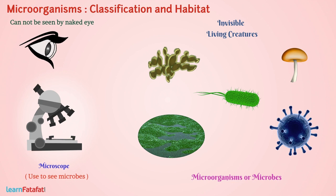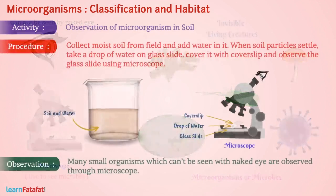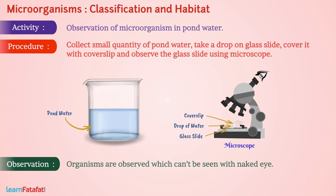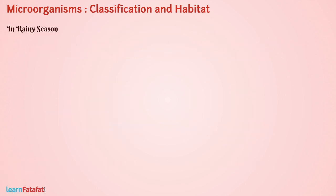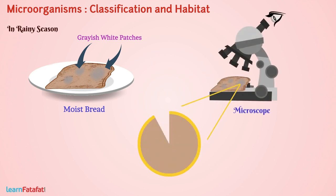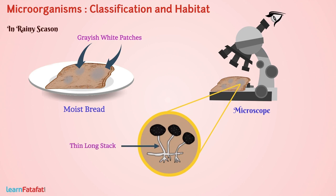During rainy season, moist bread gets covered with greyish white patches. If we observe these patches through a microscope, we will find tiny black rounded structures growing on thin long stalks from the bread. These microorganisms are called bread mold.